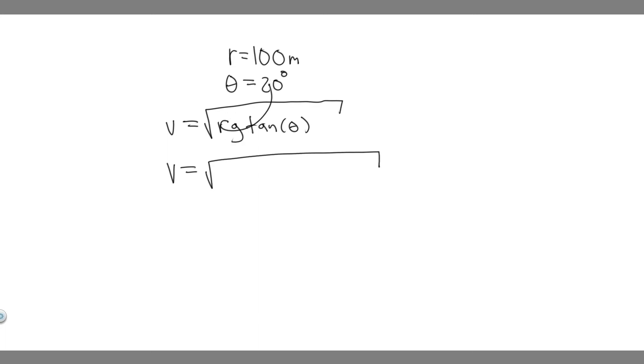So the radius is just going to be 100 meters. g is just going to be the acceleration due to gravity, which is 9.8 or 9.81. I'm just going to use 9.8. And then you just want to take the tangent of the angle, or the banking angle. In this case, it's going to be 20 degrees, so we take the tangent of 20.